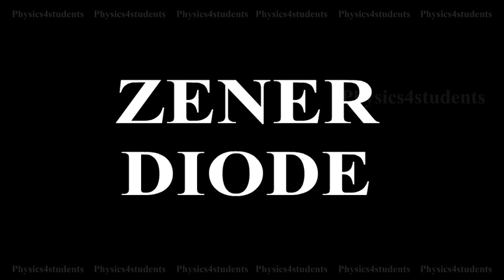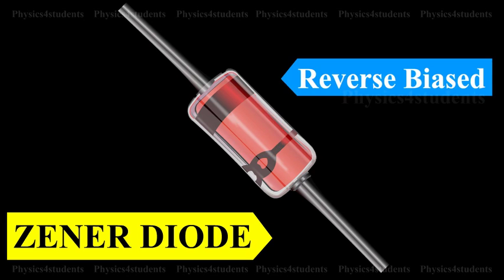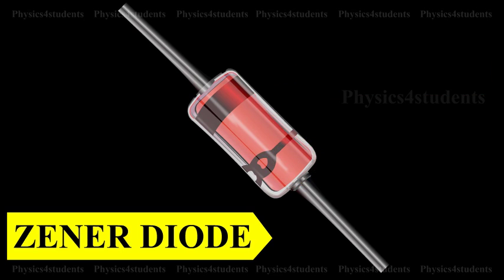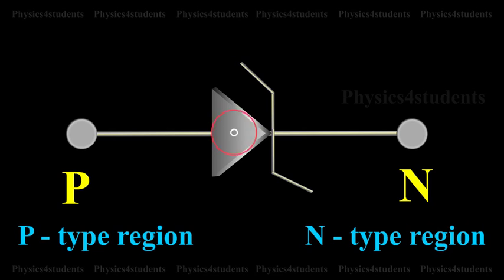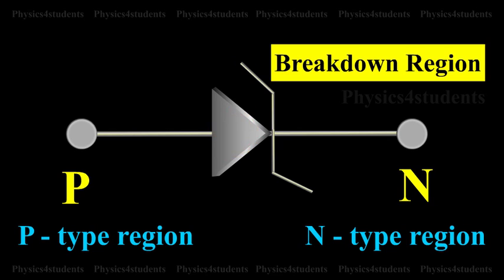Zener diode. Zener diode is a reverse biased, heavily doped semiconductor, i.e. silicon or germanium PN junction diode which is operated exclusively in the breakdown region.